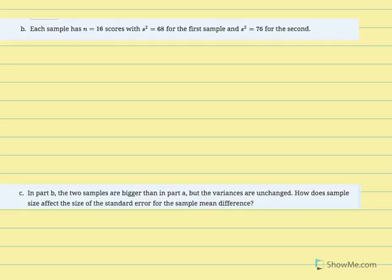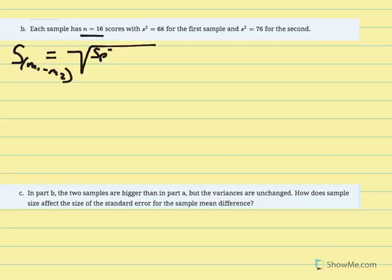Problem 11B: each sample now has 16 individuals with variance of 68 for the first sample and 76 for the second. Those variances remain the same; what we're changing is sample size. We're going to calculate the estimated standard error of the mean difference and see the effect of having increased sample size from 4 to 16. To do so we first need our pooled variance.